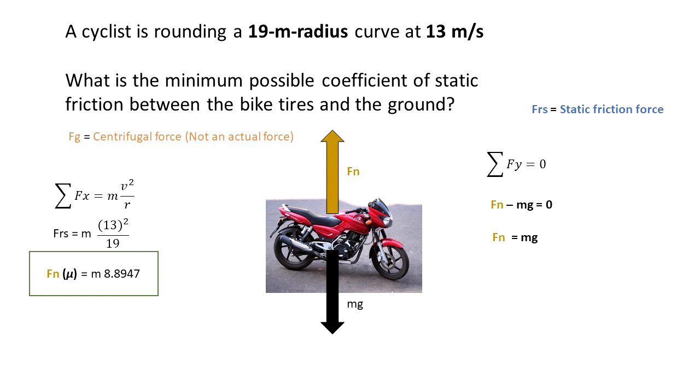Then I'm going to replace the Fn that I just got, which equals mg, into the equation in the green box. And I get that mg times the coefficient of static friction is equal to m times 8.8947.